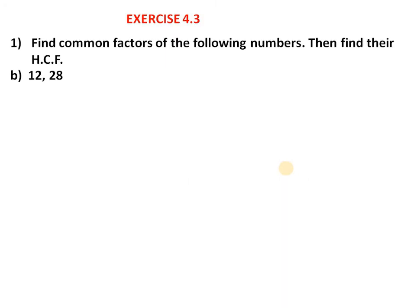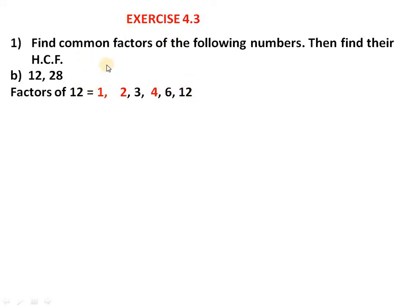Based on the same question there is part B: 12 and 28. We will first find factors of both numbers, then common factors, and lastly the HCF. Factors of 12: 1 × 12, 2 × 6, 3 × 4. So the factors of 12 are 1, 2, 3, 4, 6, and 12.